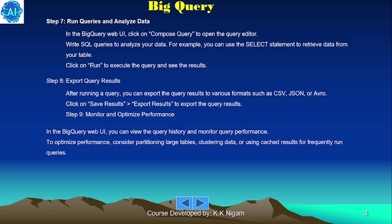Step nine is to monitor and optimize performance. In the BigQuery web UI, you can view the query history and monitor query performance. To optimize performance, consider partitioning large tables, clustering data, or using cached results for frequently run queries.